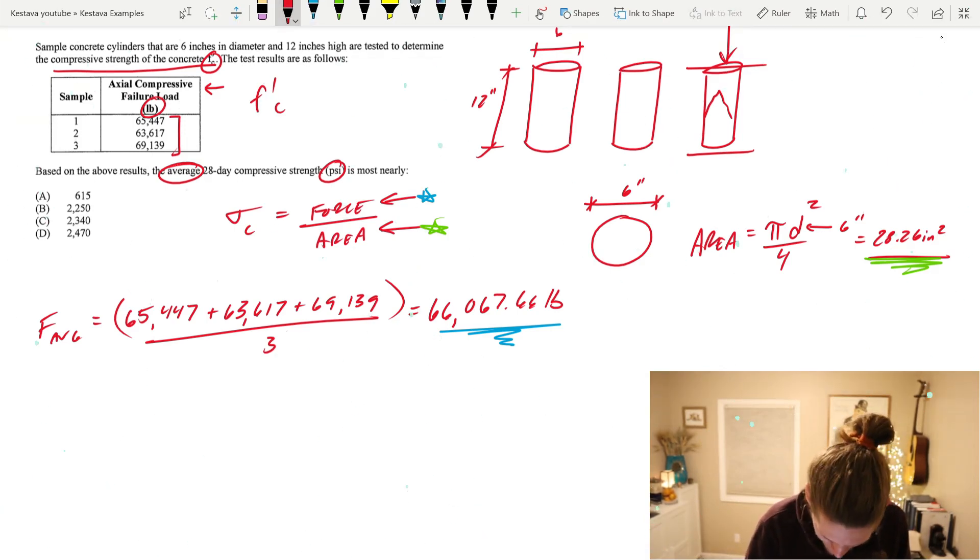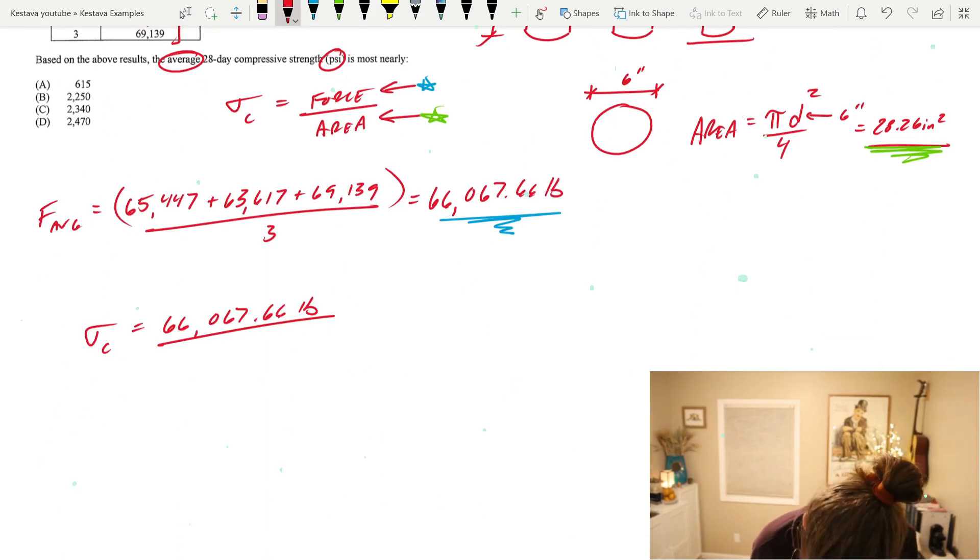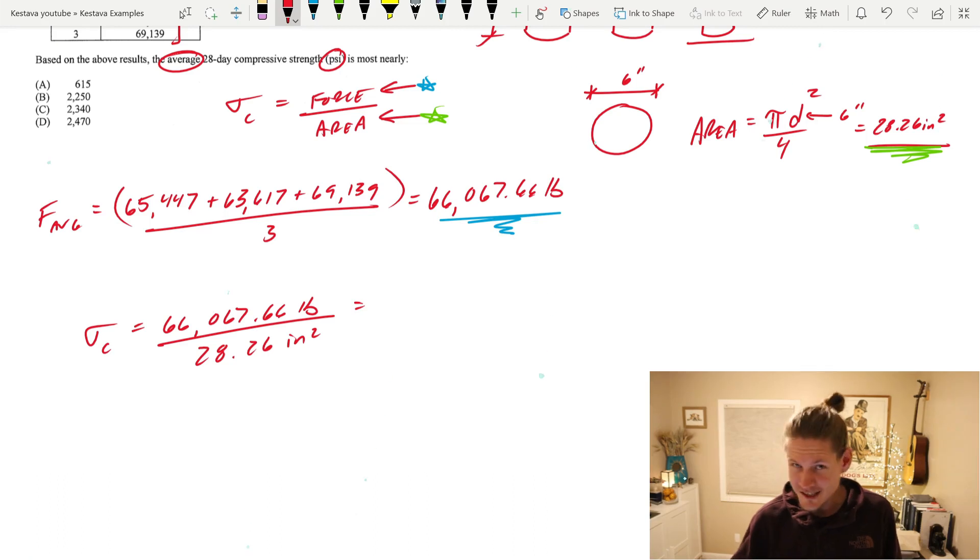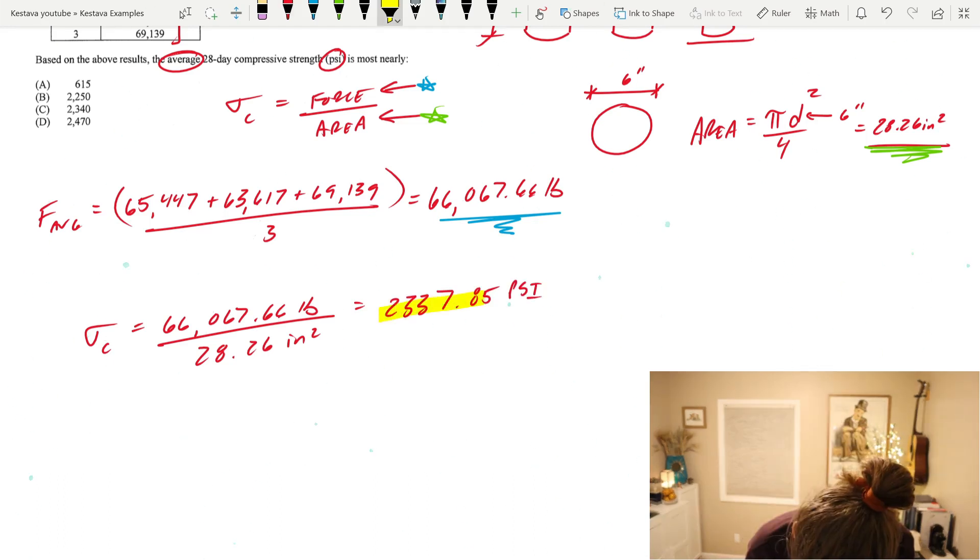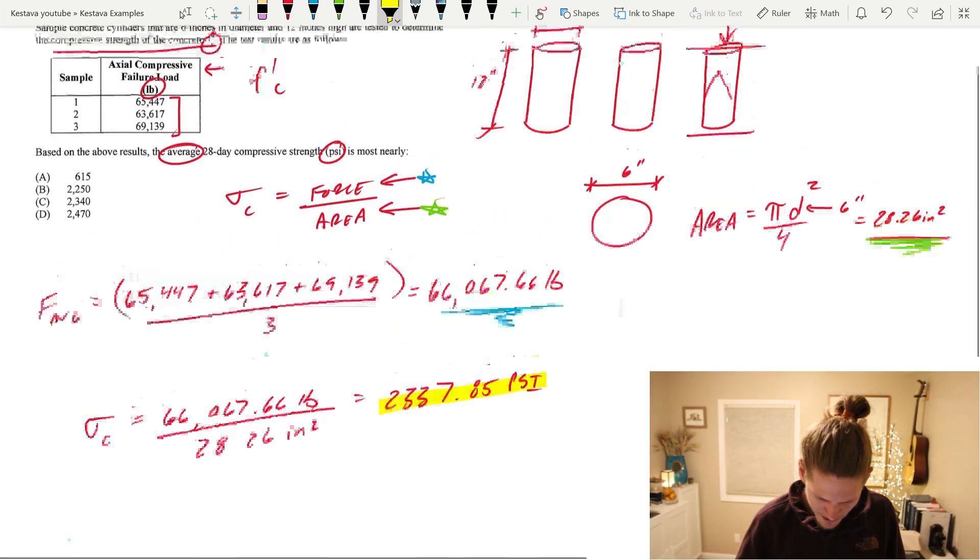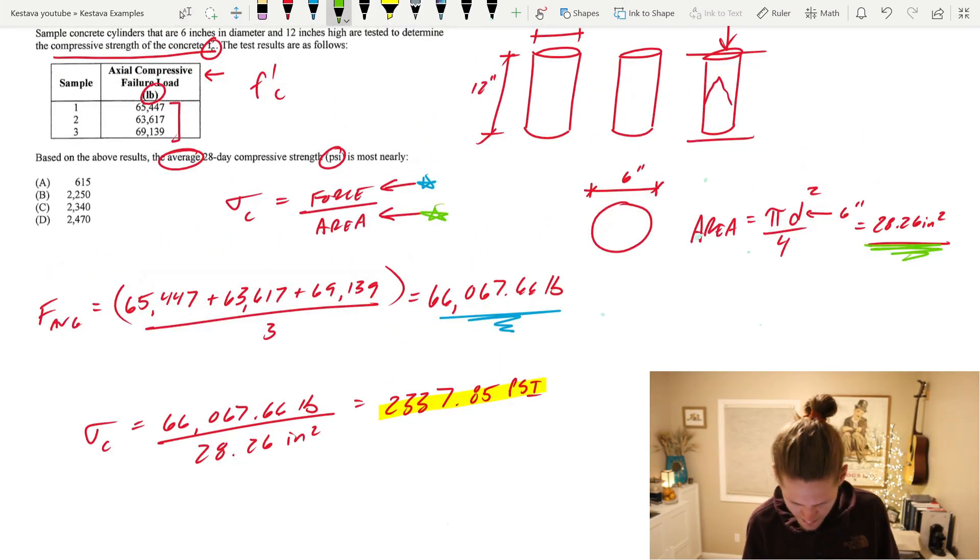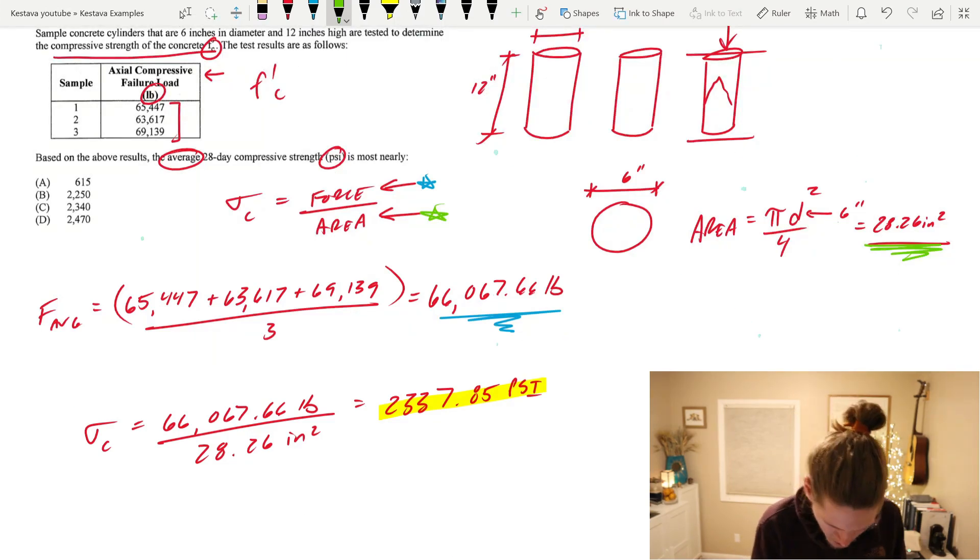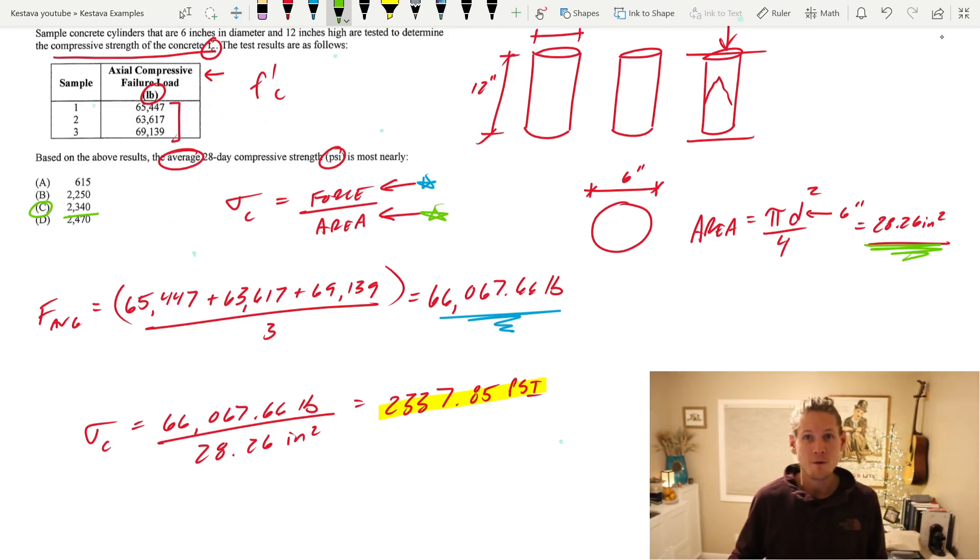And then from there to find our stress, we just go that over that. Pounds over inches squared - that's PSI. We know our units check out, we're good. Which equals 2,337.85 PSI. If we scroll back up at the top here, we go green for right answers. That is most closely answer C - 2,340 PSI is our average 28-day compressive strength of our concrete.